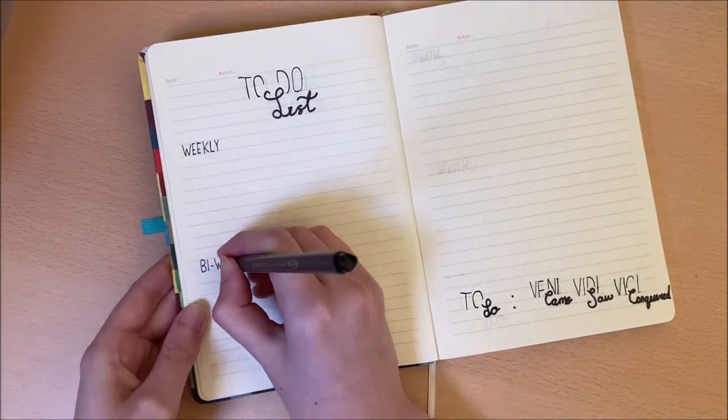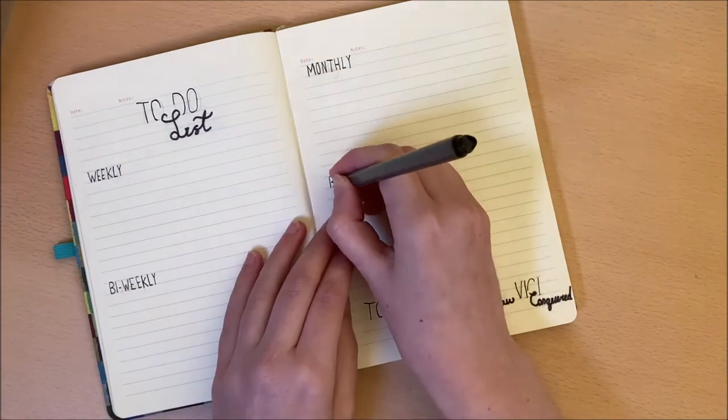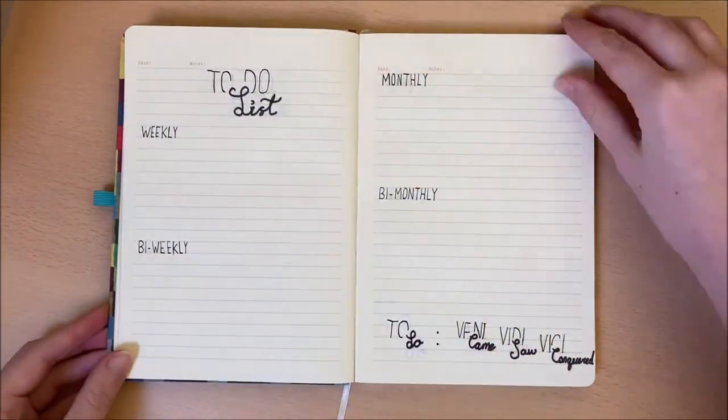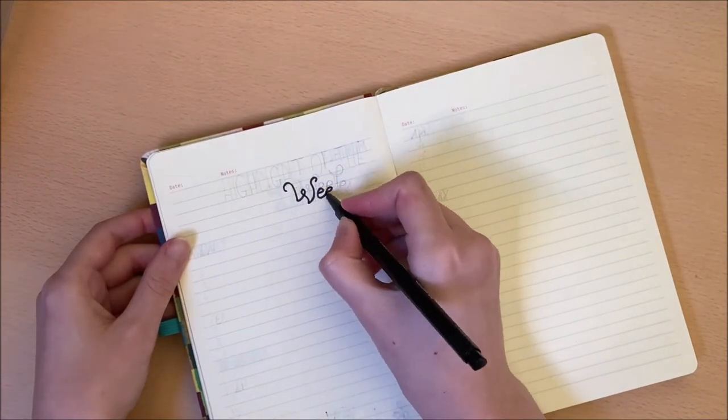So here is a quick place to write down to-do lists that you do every week, every two weeks, every month or every two months. It's handy to keep all of these in one place so you can just check it off as the year goes on.